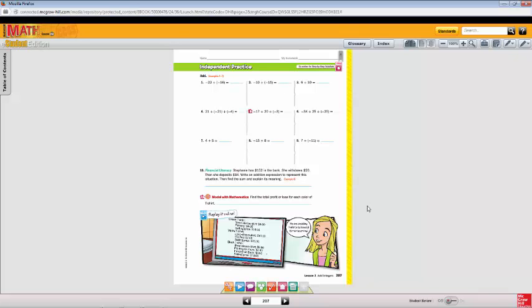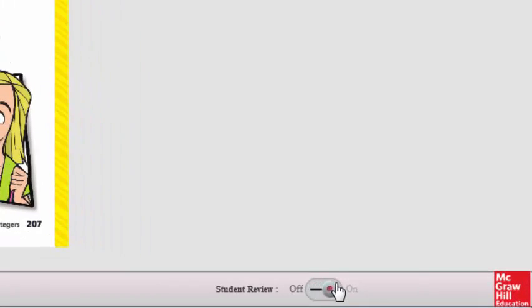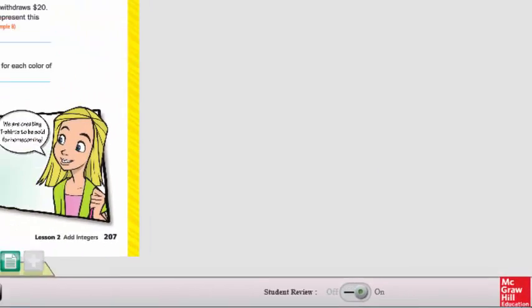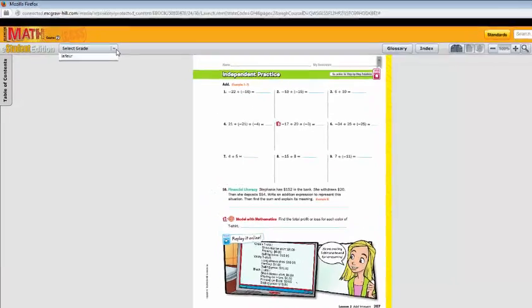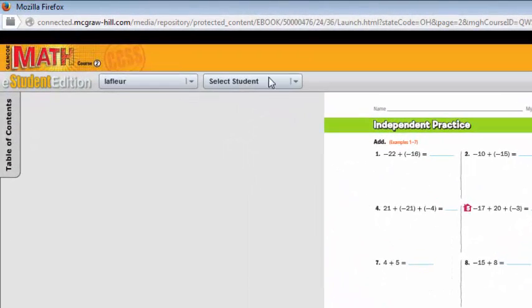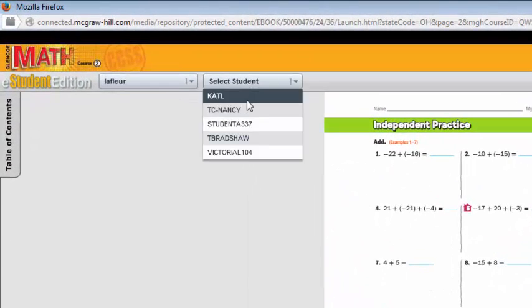Notice at the bottom right-hand corner, you have a button called Student Review. I'm going to turn the Student Review button on. From here, I will select my class, and from my class, I will select my student.